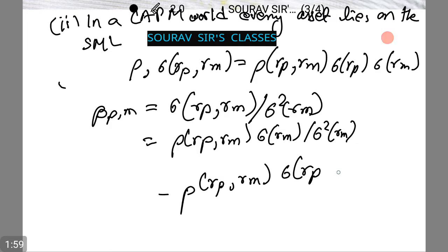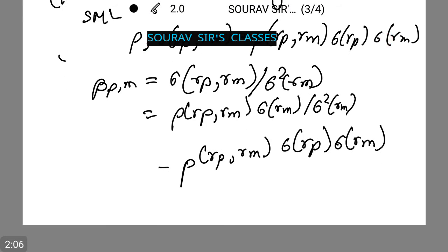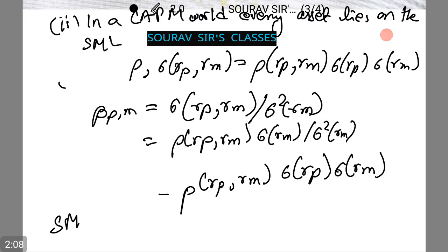Now it follows that SML can be written as E(Rp) = Rf + [E(Rm) - Rf] × ρ(Rp,Rm) × σRp / σRm